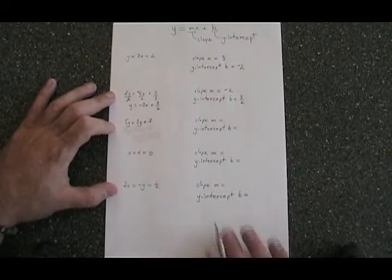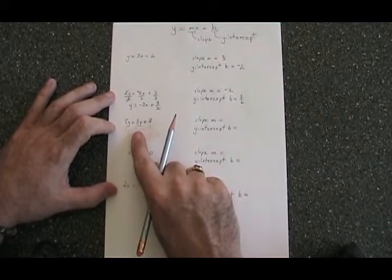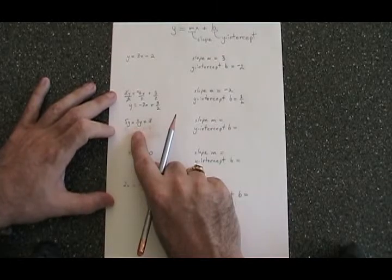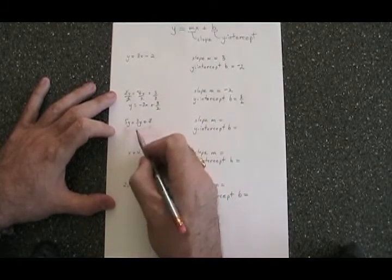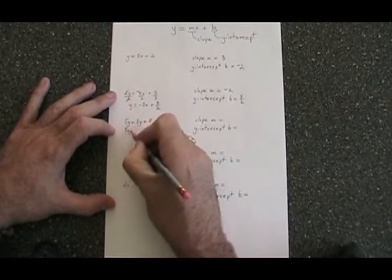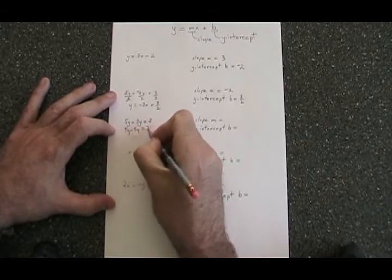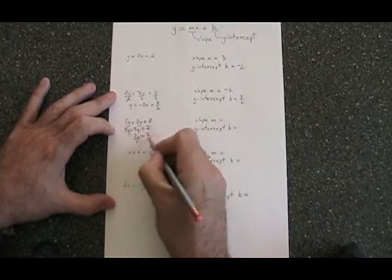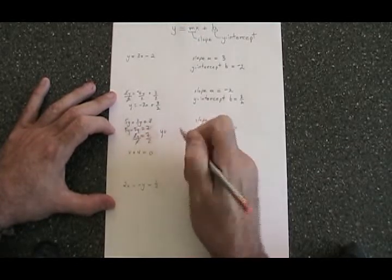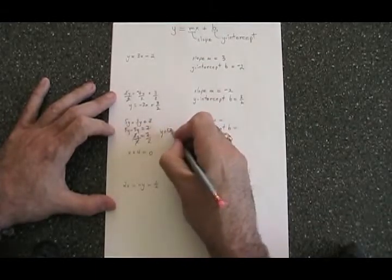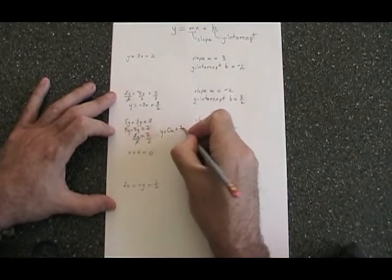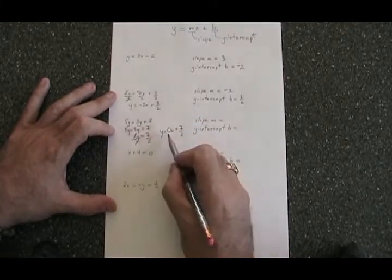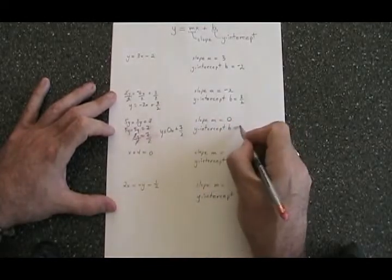In the third example, 5y equals 3y plus 7 does not have any x terms. We can still do the y equals mx plus b form though. If we move the 3y to the other side, it becomes negative, and we end up with 2y equals 7. If we divide both sides by 2, we end up with y equals 7 halves, but we can write that as y equals 0x plus 7 halves. Therefore, we're in y equals mx plus b form, and our m is equal to 0. Our b is equal to 7 halves.